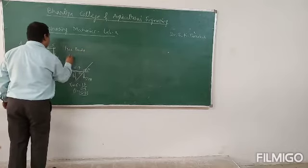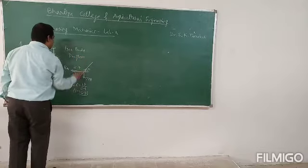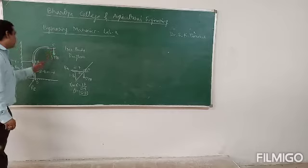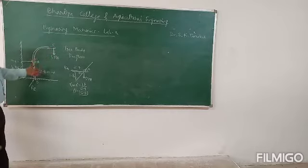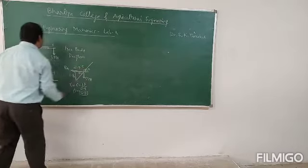So this is the free body diagram of the crane having this type of location. Forces are there: 5 kN acting downward at C. This point is C.